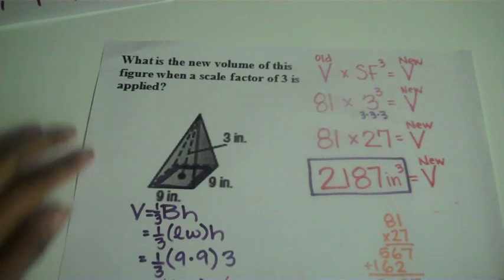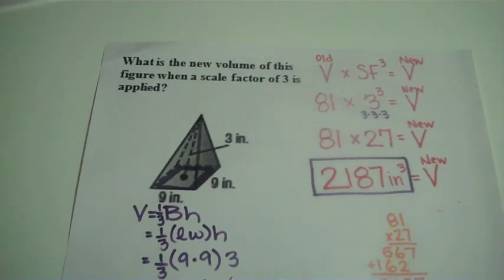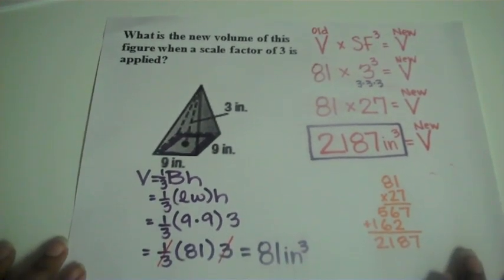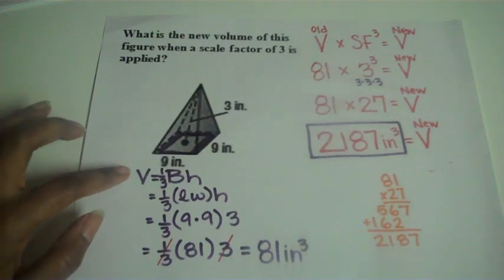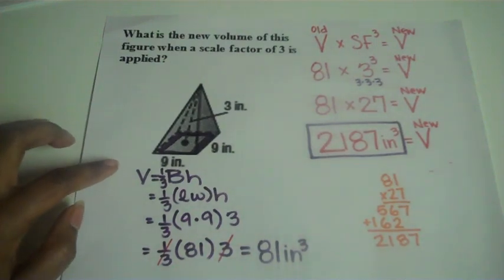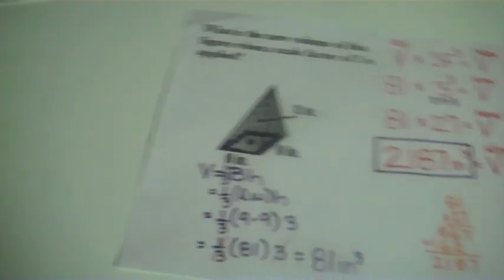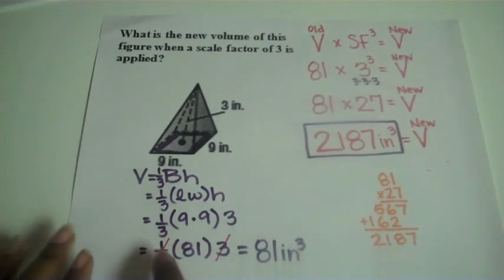Alright, in our last example here, we've got a square pyramid that we are applying a scale factor of 3 to get our new volume. Remember, a volume of a pyramid, 1 third area of the base times height. Alright, so hopefully that worked out for you and you got a volume of 81 inches cubed.